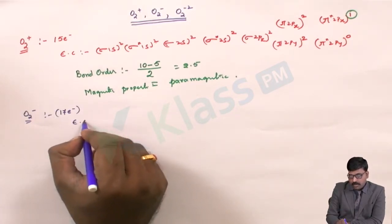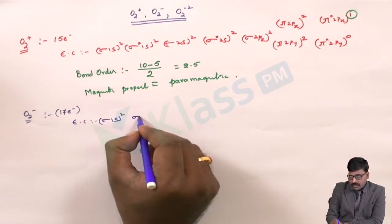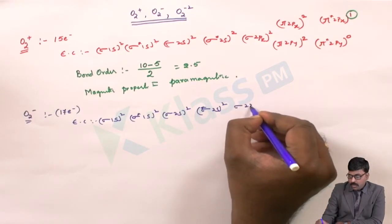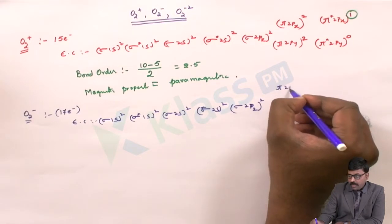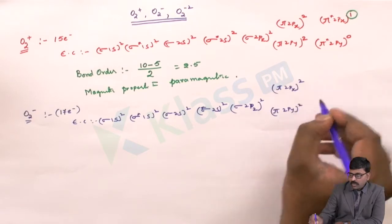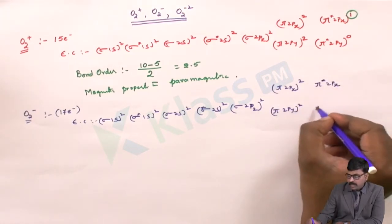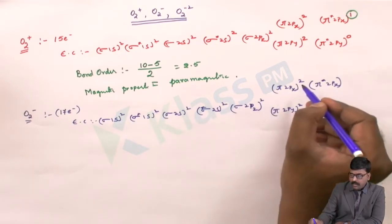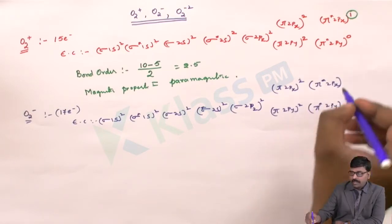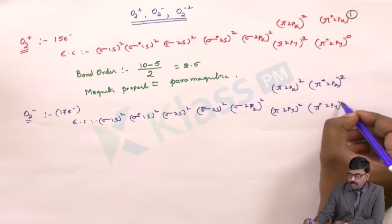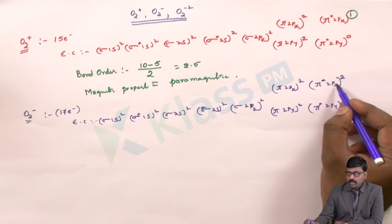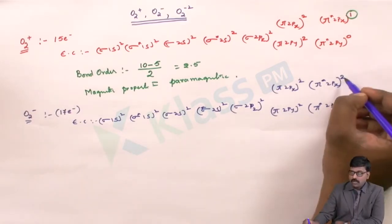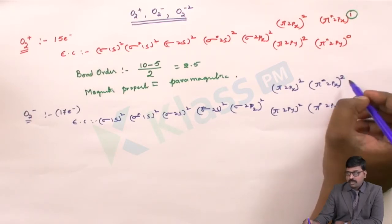The electronic configuration of O2 minus is: sigma 1s2, sigma star 1s2, sigma 2s2, sigma star 2s2, sigma 2pz2, pi 2px2, pi 2py2, pi star 2px, pi star 2py — accounting for 14 electrons. Three more electrons need to be filled. The O2 molecule has pi star 2px1 and pi star 2py1; the one extra electron in O2 minus goes to either pi star 2px or pi star 2py, making one of them 2.